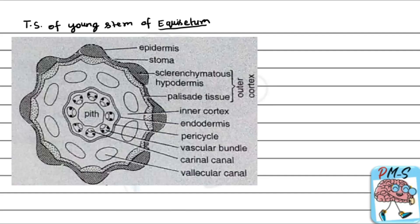In Equisetum we have the epidermis with stomata, because leaves are not much developed. Then we have sclerenchymatous hypodermis and palisade tissue — both constitute the outer cortex. In the inner cortex, shown in red, are the vallecular canals — these are air-filled cavities.